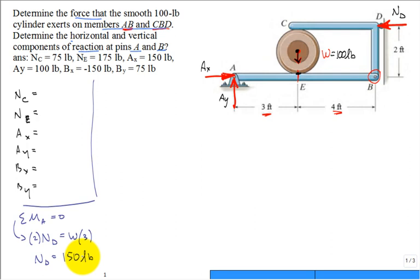Now, it wasn't asked for, but I think we're going to need it. Because now, same free body diagram, sum of the forces in the X equal to zero. That gives us that Ax is equal to ND. And so, Ax is now solved for 150 pounds.